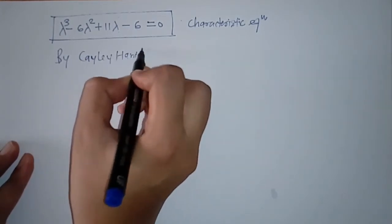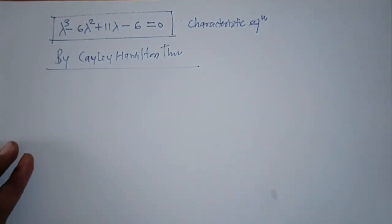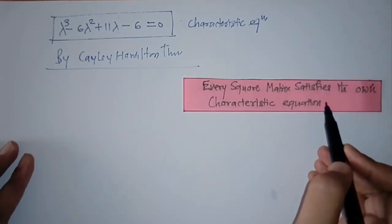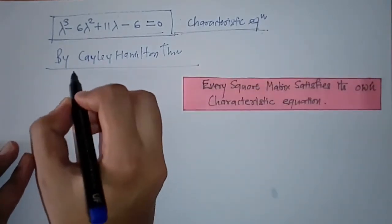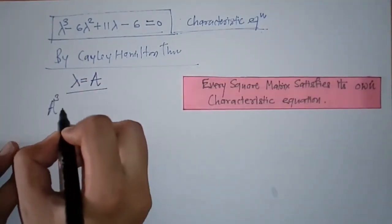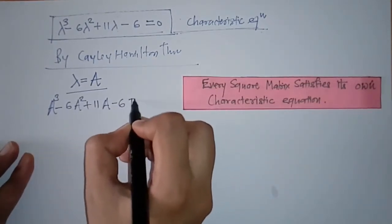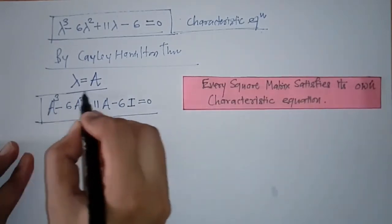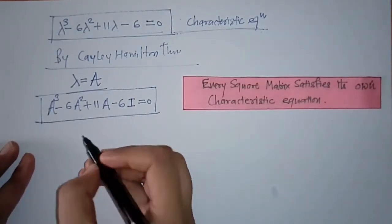Now we have to write this using the Cayley-Hamilton theorem. This theorem states that every square matrix satisfies its own characteristic equation. So by using this characteristic equation, we replace λ with matrix A and write the equation in matrix form. Here I is the identity matrix of order 3×3. So we have written this by using the Cayley-Hamilton theorem.